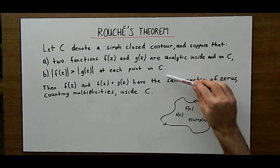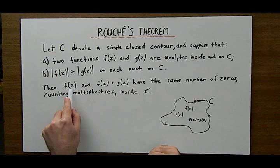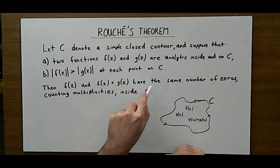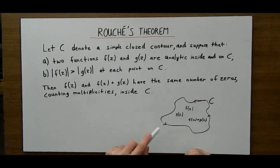So if you have these two conditions, a and b, being satisfied, then the conclusion is that f and the sum of f and g have the same number of zeros up to multiplicity inside C.